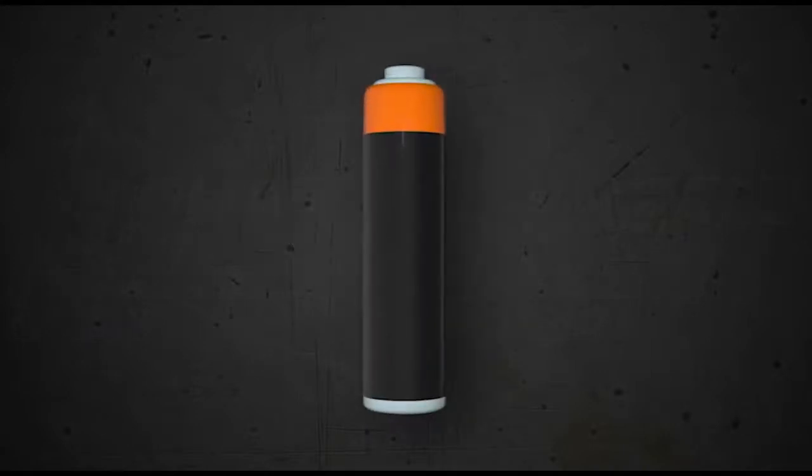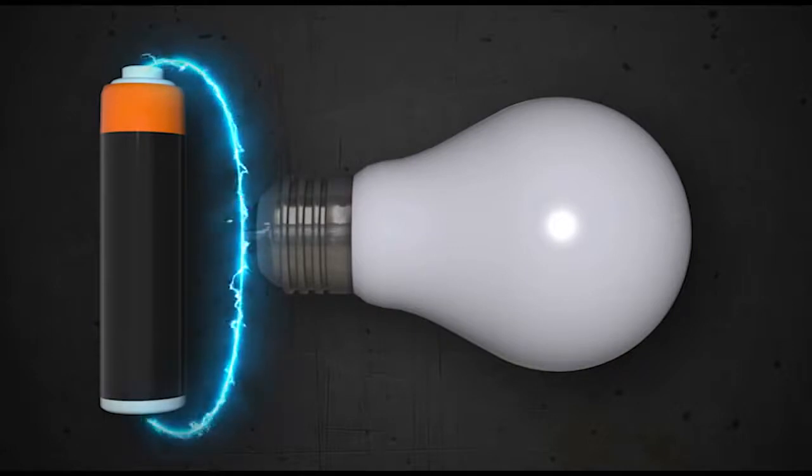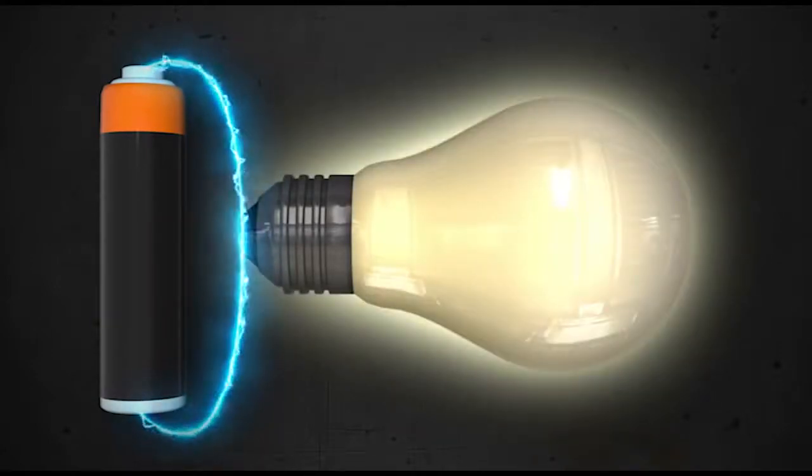First, some basic theory. We all remember the basics of circuitry. Take a power source like a battery, run it to a light bulb and then back to the battery. Bingo! The light goes on.